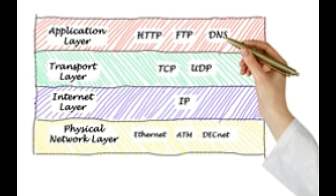An OSI model is an abstract description of the working of various layers of a network. The OSI model was developed by the International Organization for Standardization in the year 1984. It is an abstract 7-layered model that explains the working of various networks. It explains the changes that data undergoes when it passes through the network, and defines the exact stages that data must undergo when it travels from one device to another through a network.